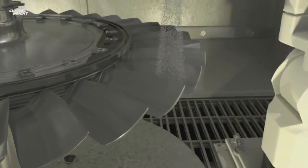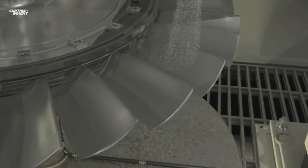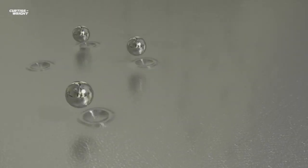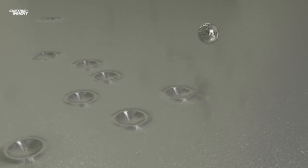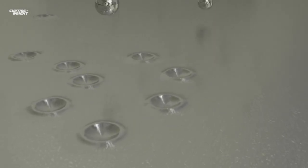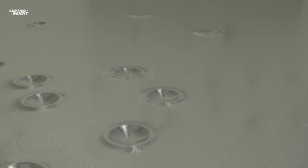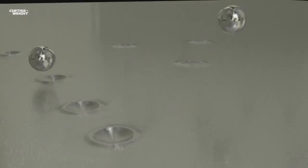Shot peening is a method of inducing compressive stress into the component by bombarding the surface with high-quality spherical media in a controlled operation. The shot can be steel, ceramic or glass, and each piece produces a controlled indentation on the surface.